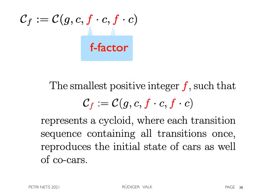Which is defined as the smallest positive integer f such that C_sub_f represents a cycloid where each transition sequence containing all transitions once reproduces the initial state of cars as well as co-cars.